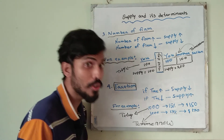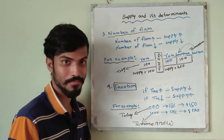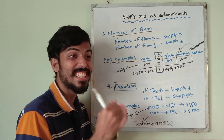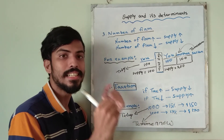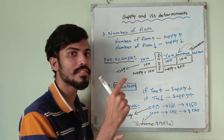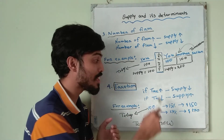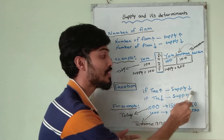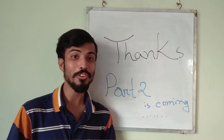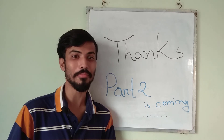Whenever your cost increases, you will consume less, and consuming less automatically leads to a decrease in supply. Just as with cost — if cost increases, supply decreases; if cost decreases, supply increases — the same applies to tax: if tax increases, supply decreases; if tax decreases, supply increases. The second part of supply and its determinants is coming soon, so please subscribe to our channel and leave a comment.